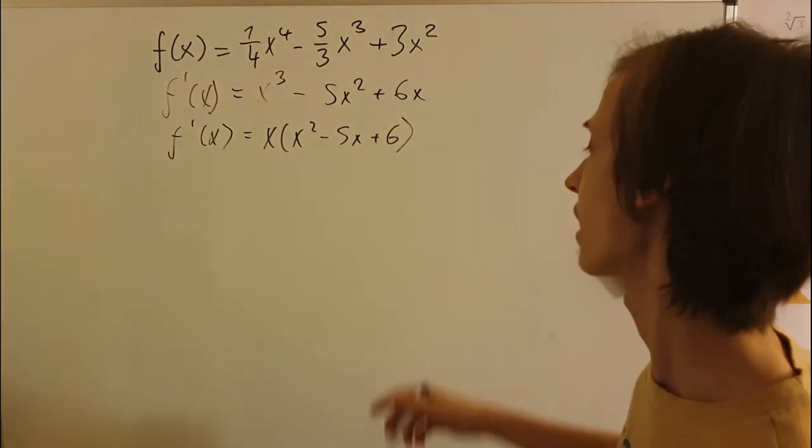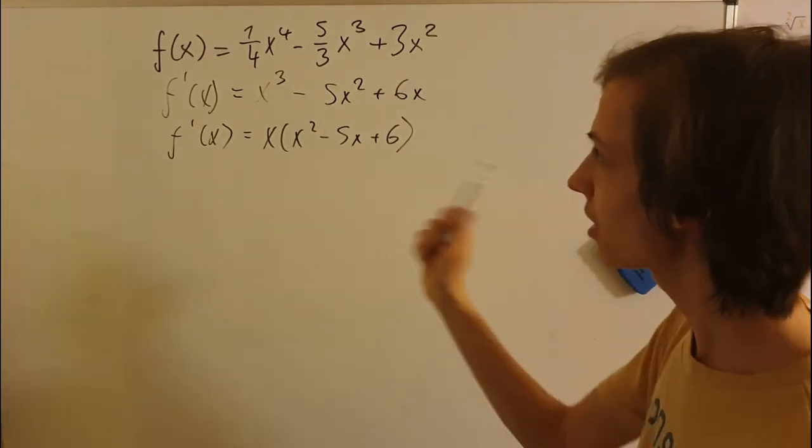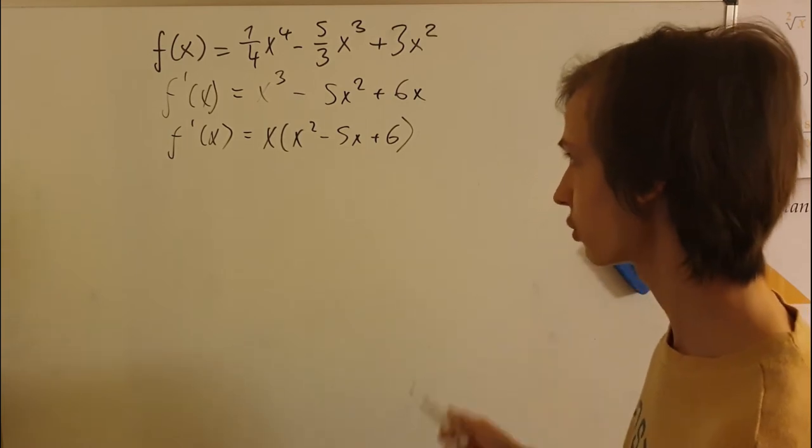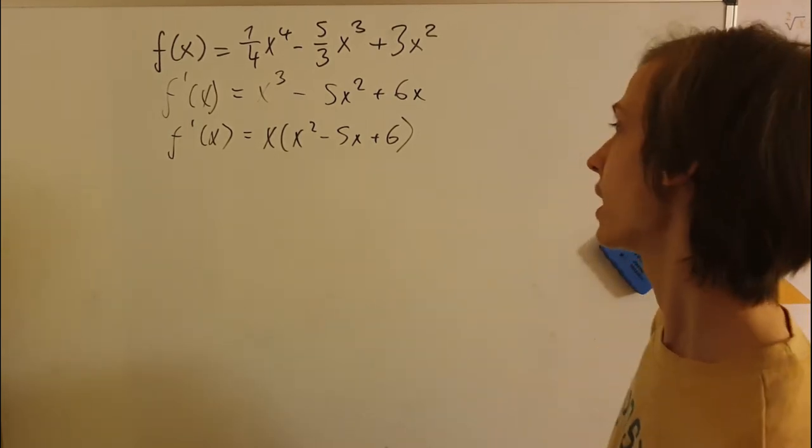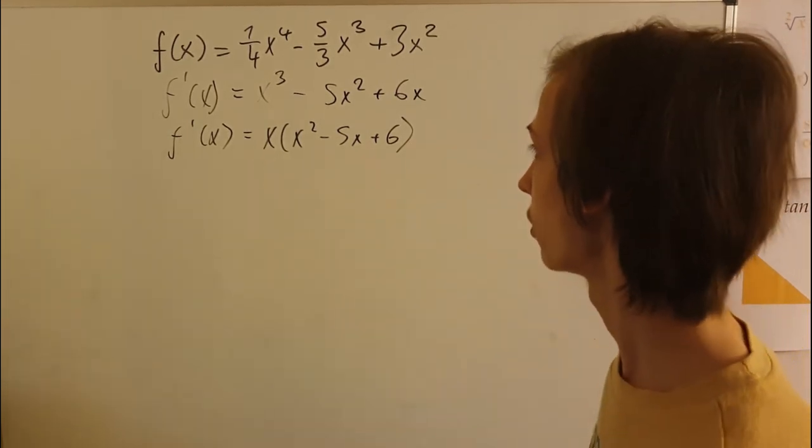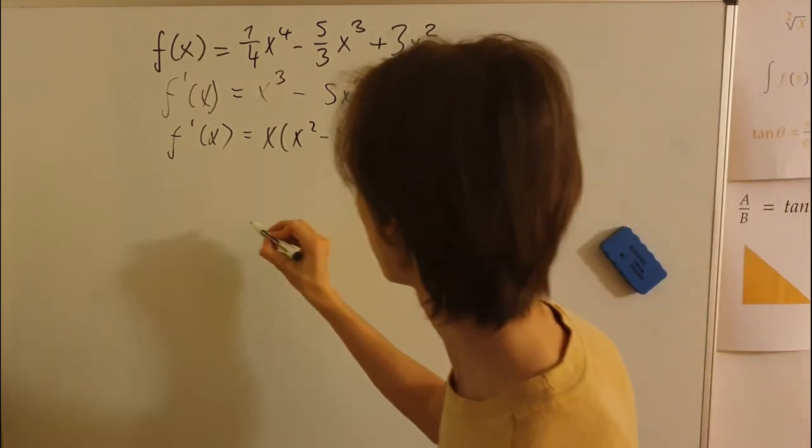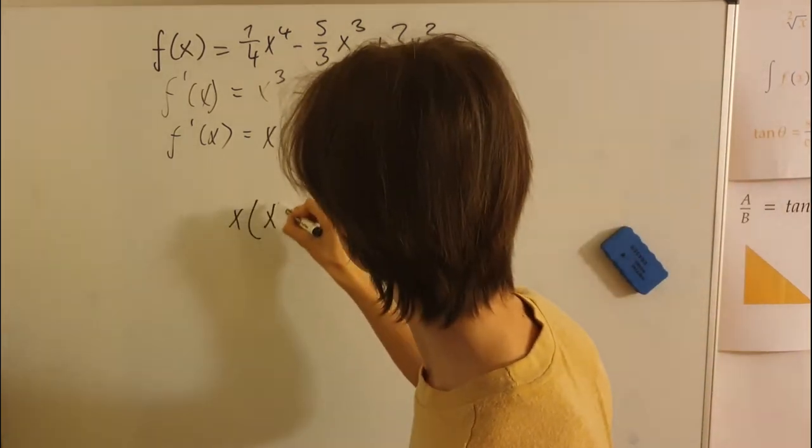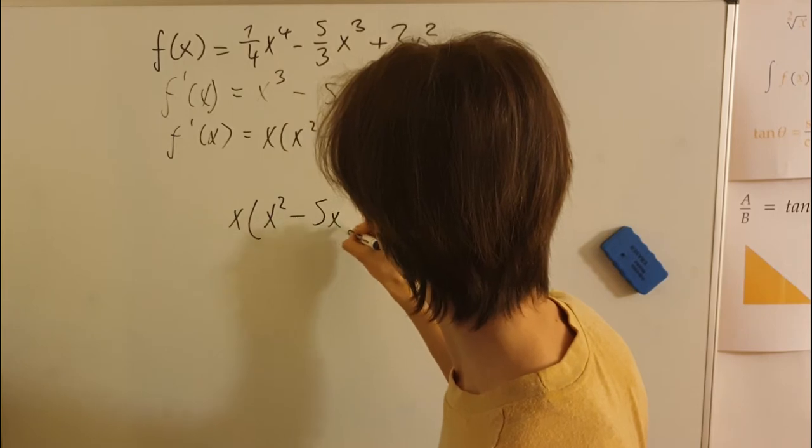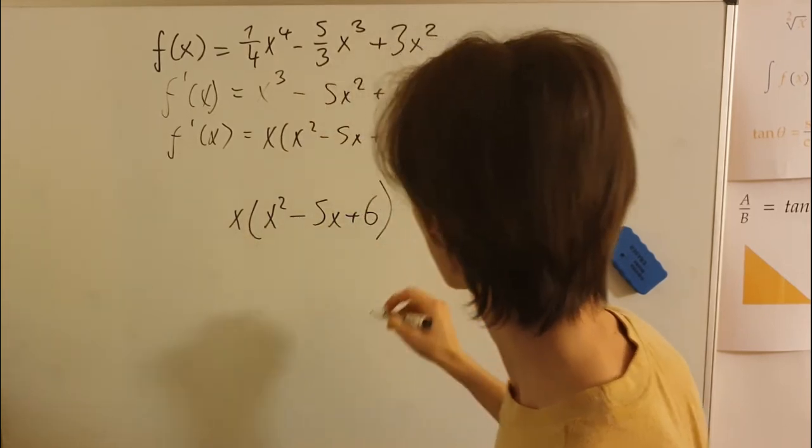And now I will need to find the critical points. And the critical points are points when the tangent line is zero. In other words, where the derivative is zero. So let's take the formula for our derivative here and let's make it equal to zero in order to find critical points where the tangent line is zero.